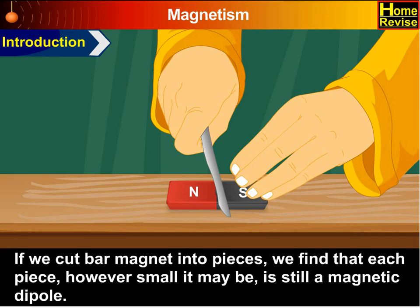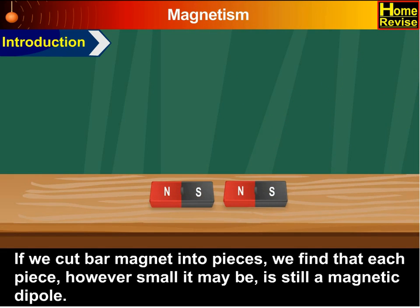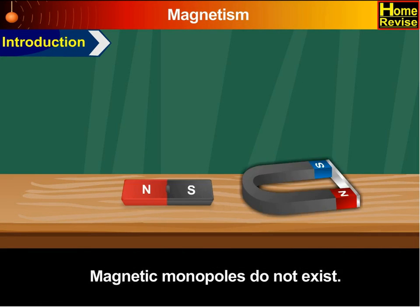If we cut a bar magnet into pieces, we find that each piece, however small it may be, is still a magnetic dipole. Magnetic monopoles do not exist.